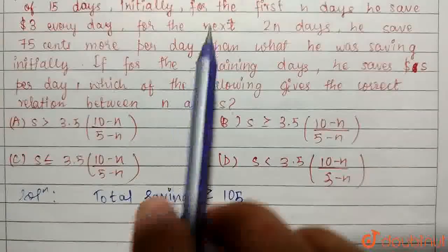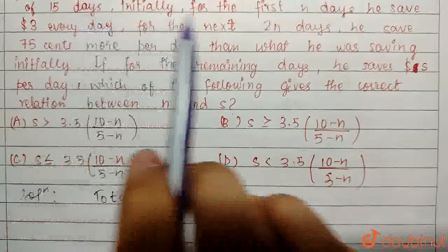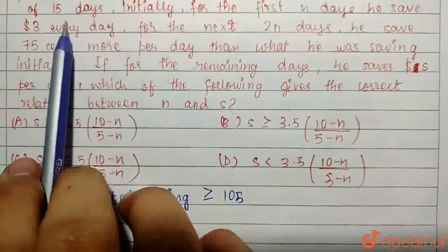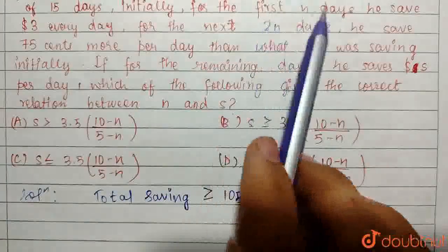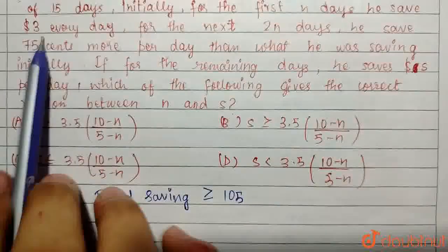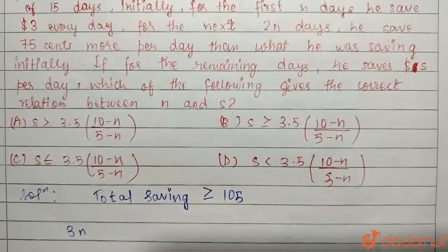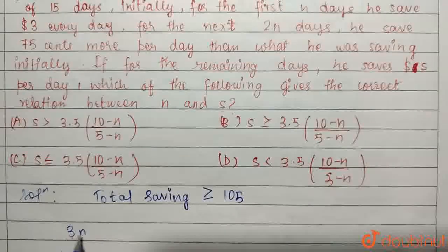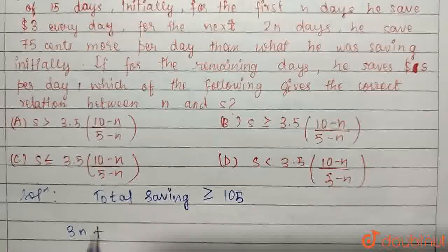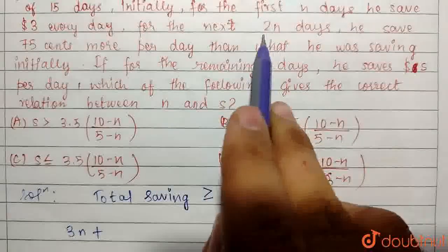Now we have been given that he saves for 15 days and initially he saves for N days, 3 dollars. So for N days he saves 3N dollars, right? 3 dollars each day for N days, plus he saves for the next 2N days.